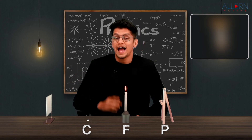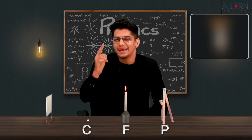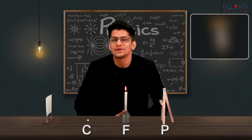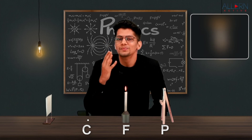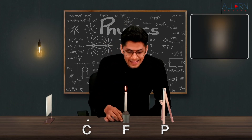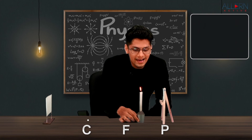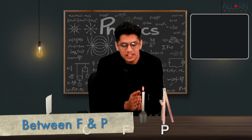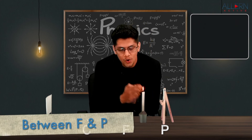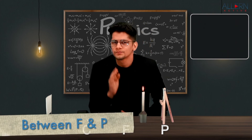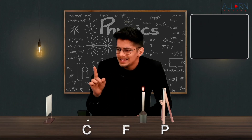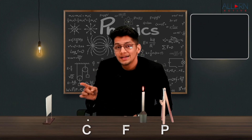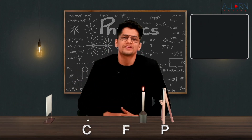Now we move the source of light within the focal length — the object is now between the pole and the focus. We observe that nothing is formed on the screen.